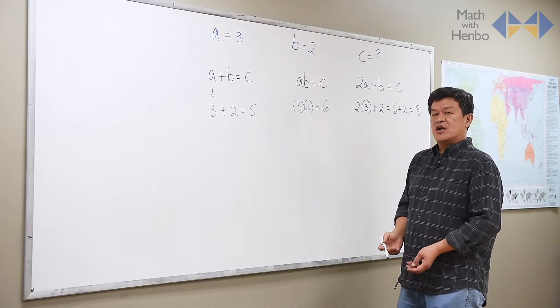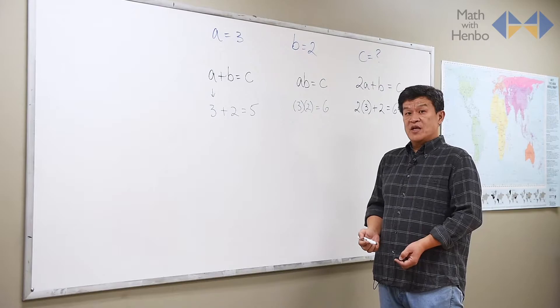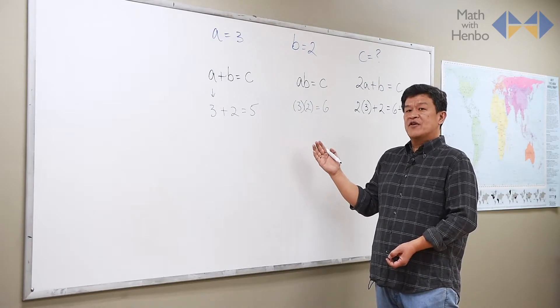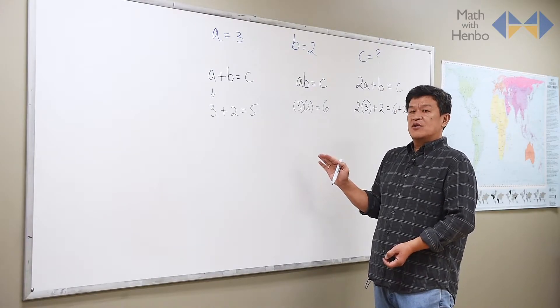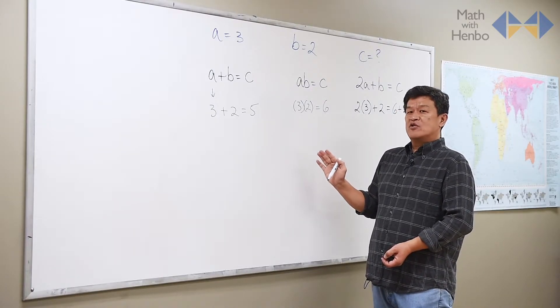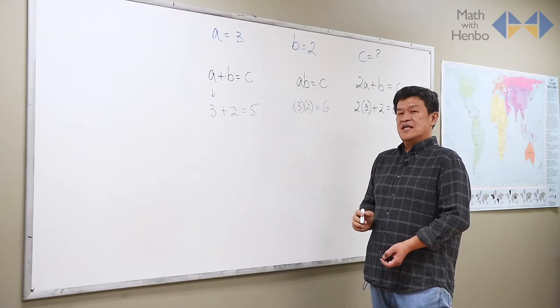This is the simplest method in terms of doing basic algebra. Two values are given, you're looking for the third. The situation changes a little bit when one of the values in the actual equation is not given.